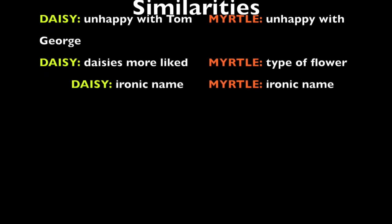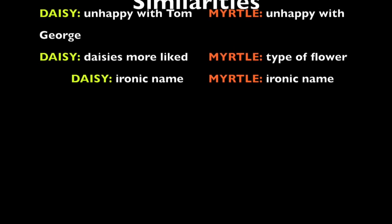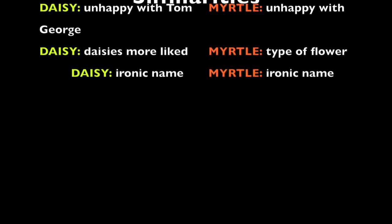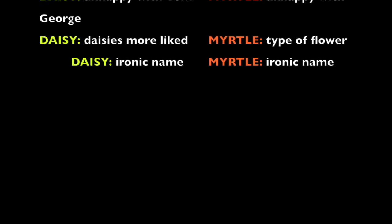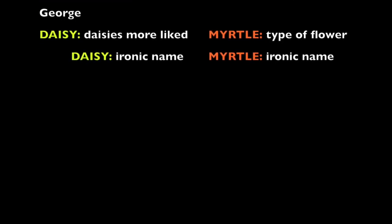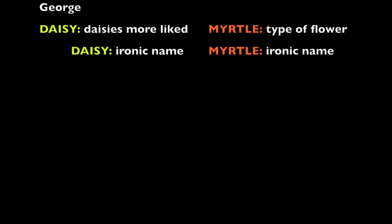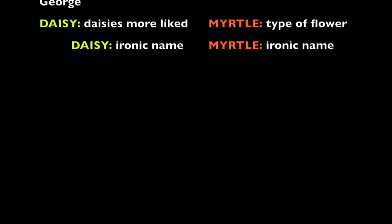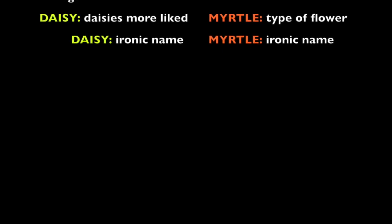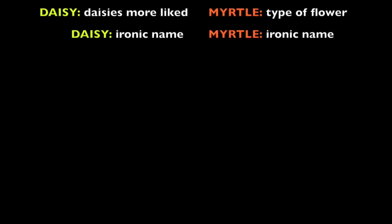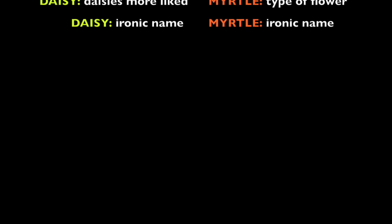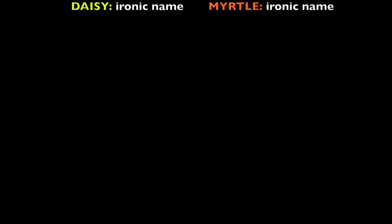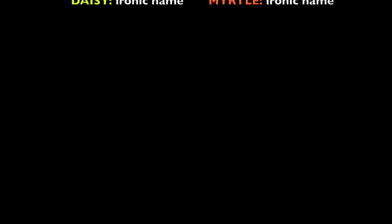The last similarity we will discuss is the irony in both Daisy and Myrtle's names. As mentioned before, daisies represent purity. However, Daisy is impure because she is unfaithful to Tom. She also leads Gatsby on, making him believe that they have a future together, and doesn't mind that she is hurting him.